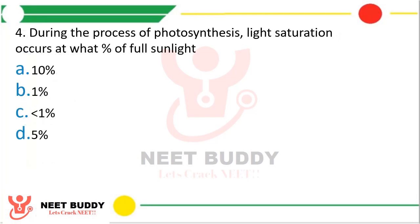Question 4. During the process of photosynthesis, light saturation occurs at what percent of full sunlight — option A: 10%, option B: 1%, option C: less than 1%, or option D: 5%? The correct answer is option A, 10%.